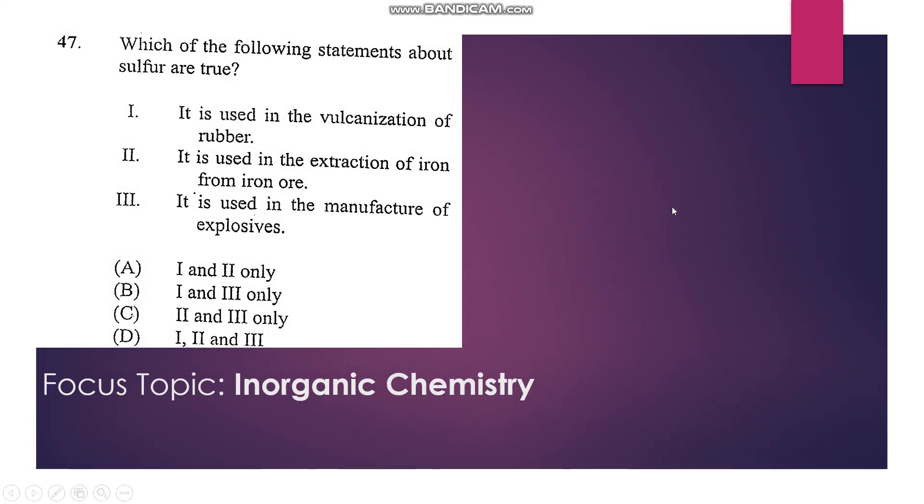Number 47: Which of the following statements about sulfur are true? It is used in the vulcanization of rubber—yes, that's true. It is used in the extraction of iron from iron ore—that's false. It is used in the manufacture of explosives—that's true. So one and three are true, so our answer is B.